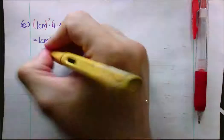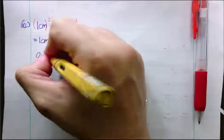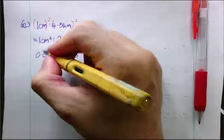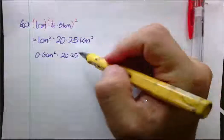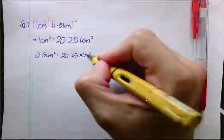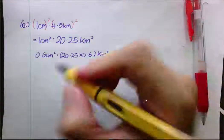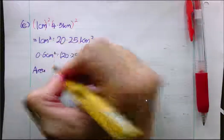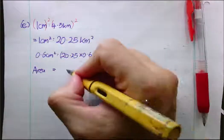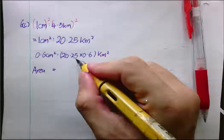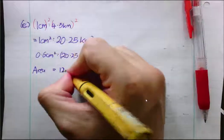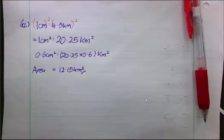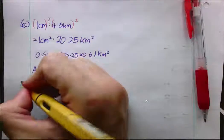1cm² represents 20.25km². Now I want 0.6cm². We'll represent 20.25. Here to here, we multiply by 0.6. So, here to here, we multiply by 0.6 as well. So, what we get is the area is equals to 20.25 times 0.6 is 12.15km².